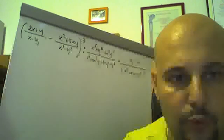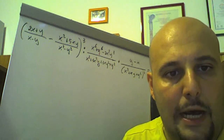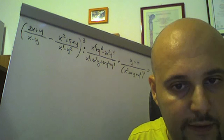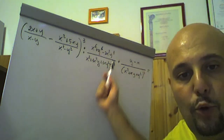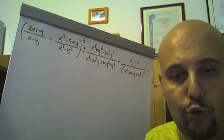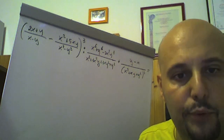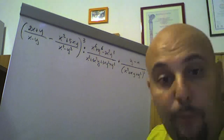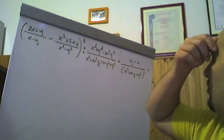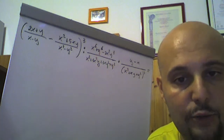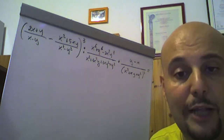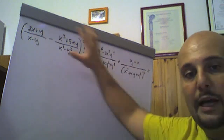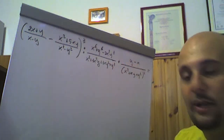Aperta la tonda: (2x più y) fratto (x meno y) meno (x quadro più 5xy) fratto (x quadro meno y quadro), chiusa la tonda al cubo, diviso (x alla sesta più y alla sesta meno 2x cubo y cubo) fratto (x cubo più 3x quadro y più 3xy quadro più y cubo), più (y meno x) fratto (x quadro più xy più y quadro) tutto al quadrato. È evidente che quel polinomio di terzo grado omogeneo e il denominatore siano notevoli. Prima eseguiamo questa divisione e poi il risultato lo sommiamo a quest'ultima frazione algebrica.